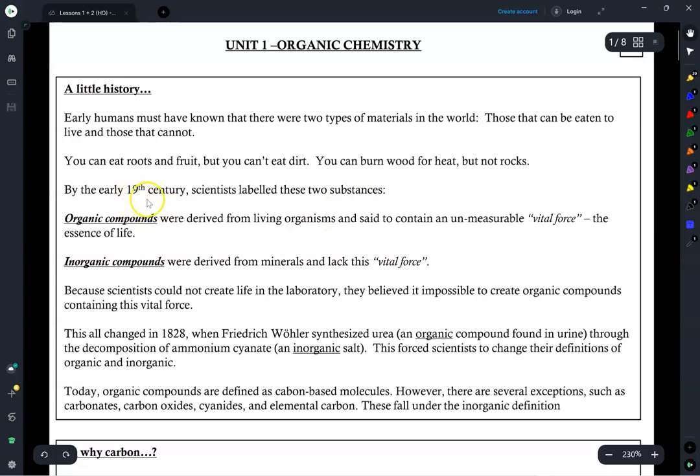And so by the early 19th century, scientists had labeled these two substances as being either organic or inorganic. It was thought that organic compounds were those derived from living organisms, hence the word organic, from organisms, and that these substances were unique in the sense that they contained an unmeasurable vital force, the essence of life. Because scientists could not create life in the laboratory, they believed it impossible to create organic compounds containing this vital force. Conversely, inorganic compounds were those that were typically derived from minerals, but most importantly they lacked this vital force.